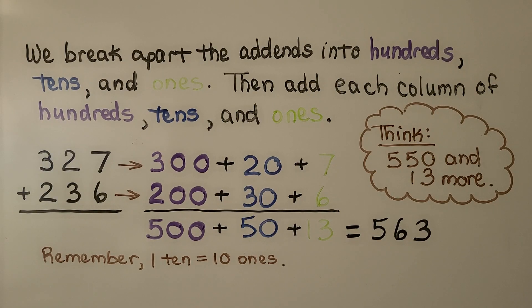We break apart the addends into hundreds, tens, and ones, then add each column of hundreds, tens, and ones.